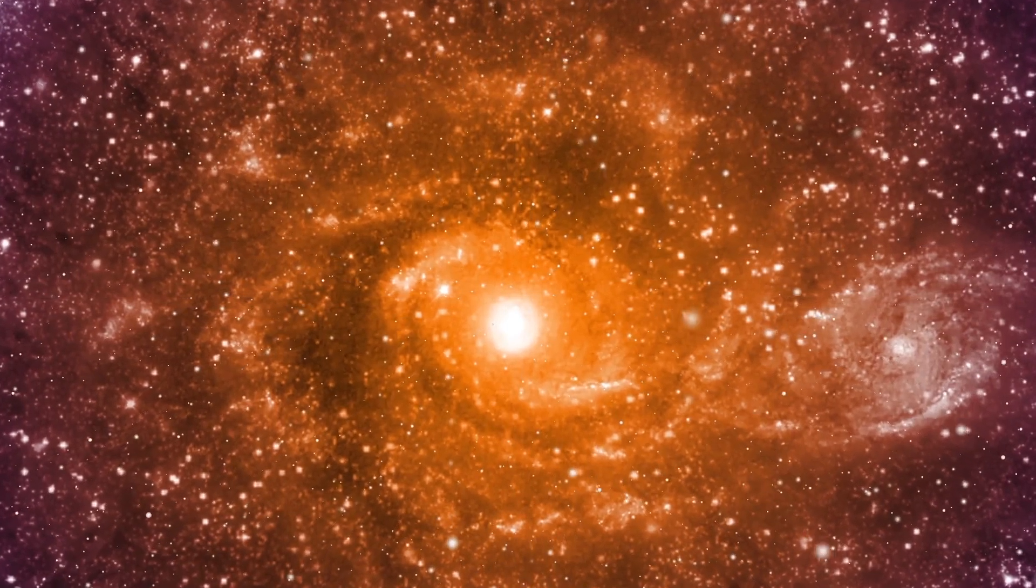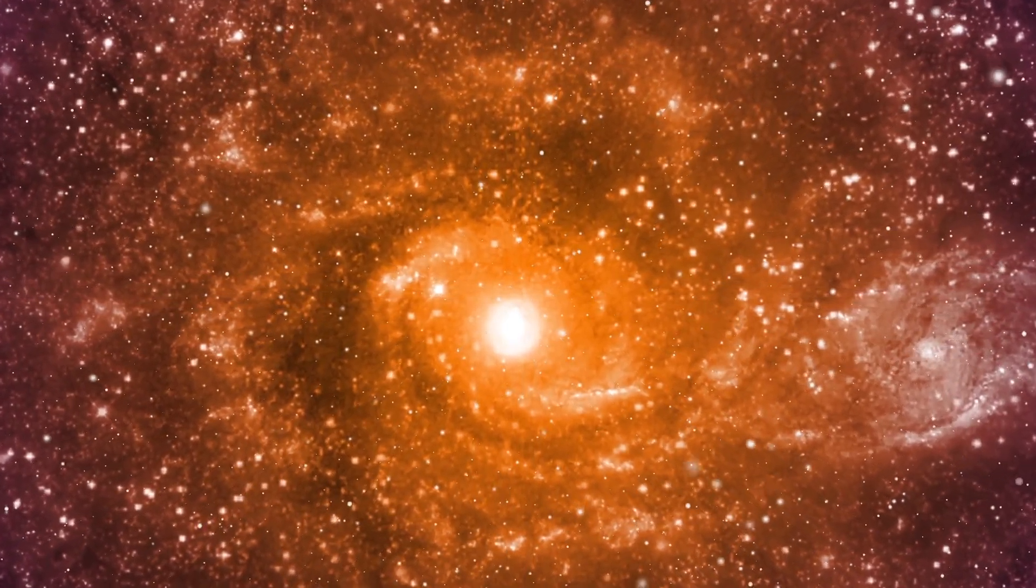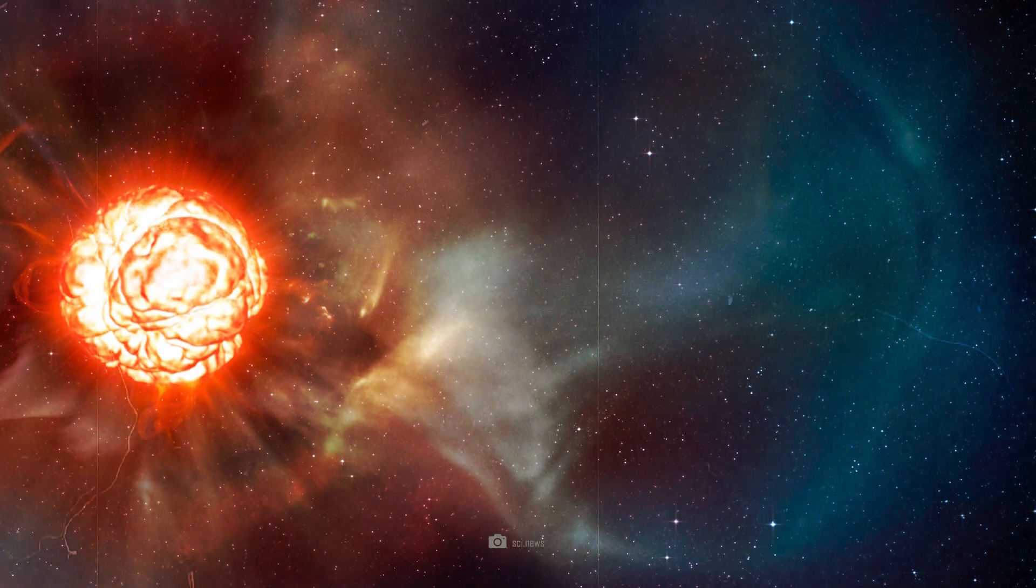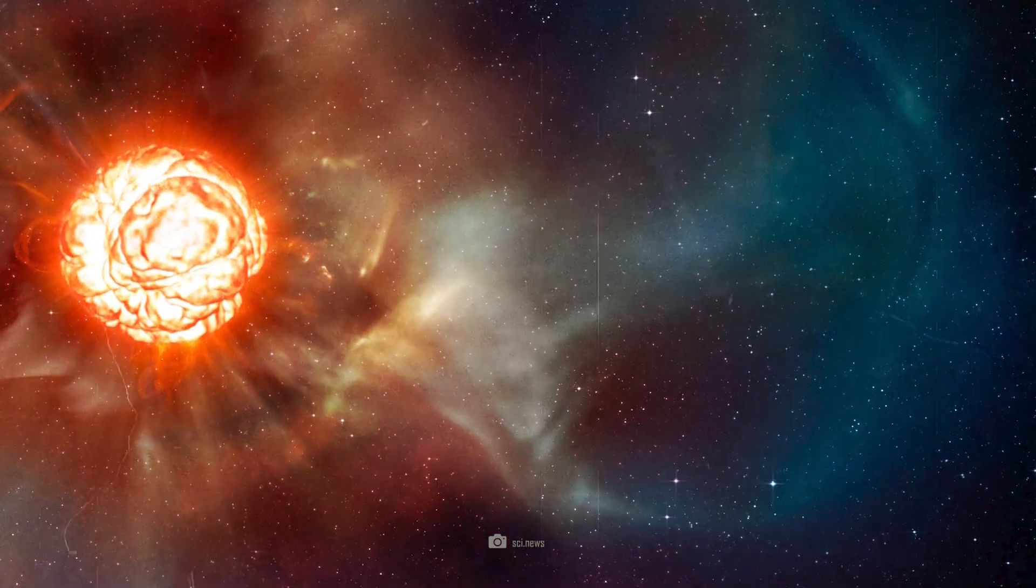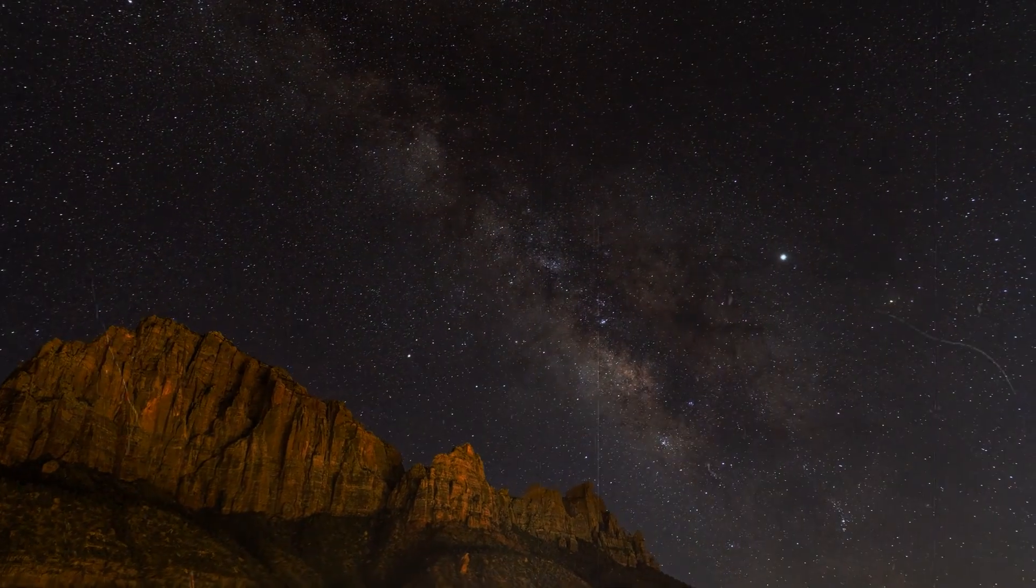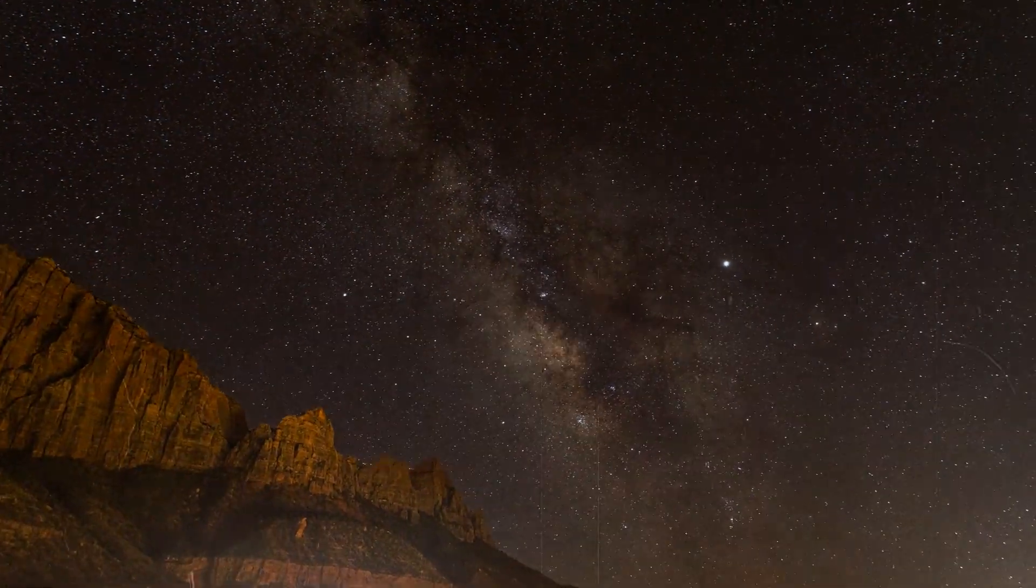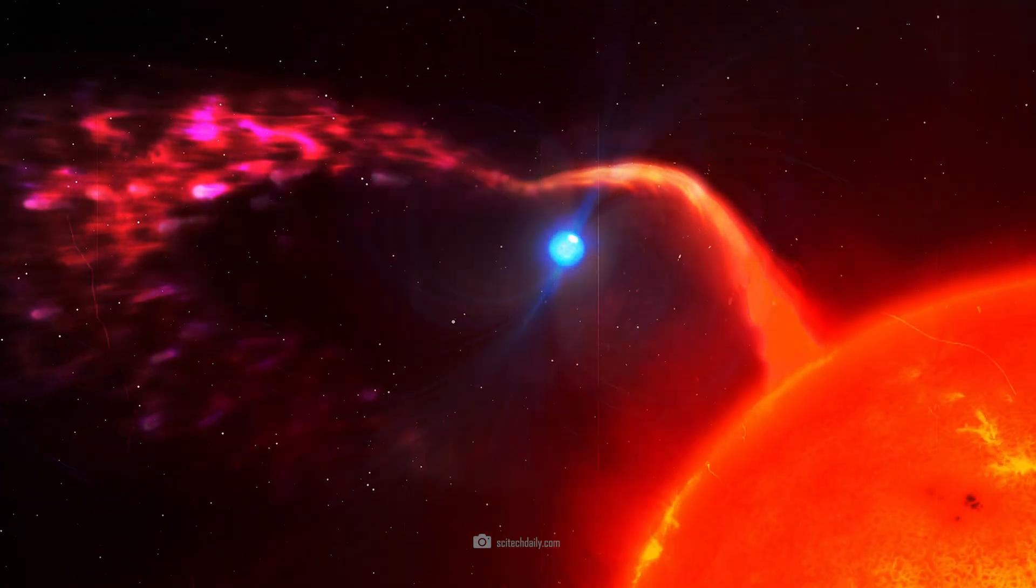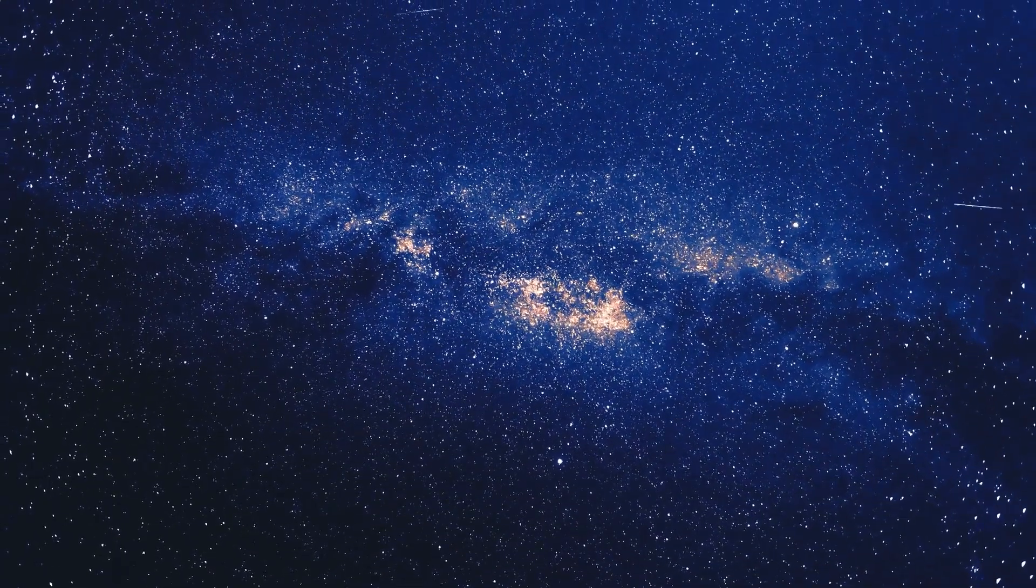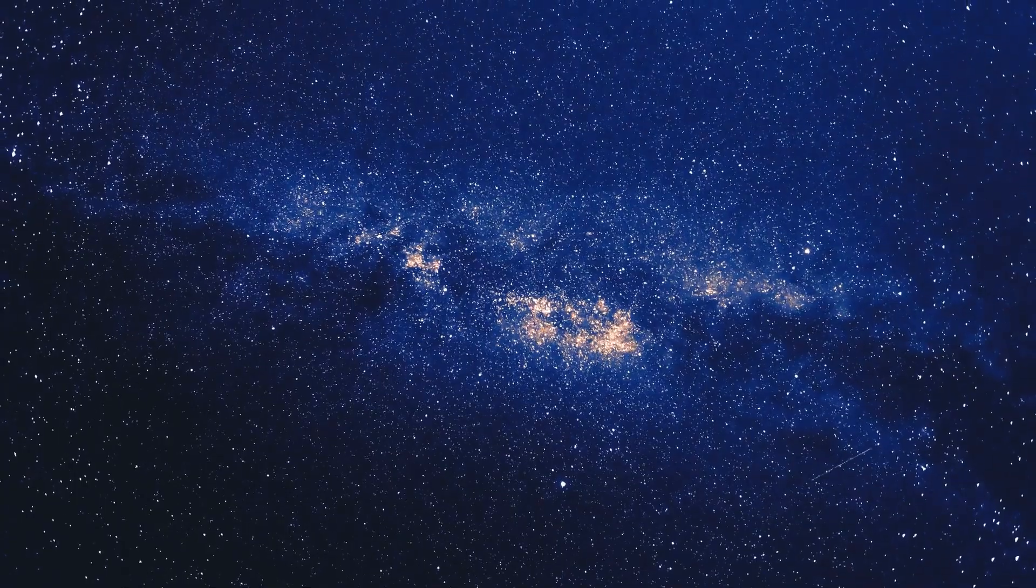A nearby nova can appear brighter to us than a very distant supernova. The next supernova visible from Earth will be the explosion of the star Betelgeuse. Researchers do not yet know exactly when this will be. Perhaps tomorrow, perhaps not for a few thousand years. However, we will certainly see the nova of the white dwarf T Corona Borealis, and the next one will almost certainly come in 80 years.